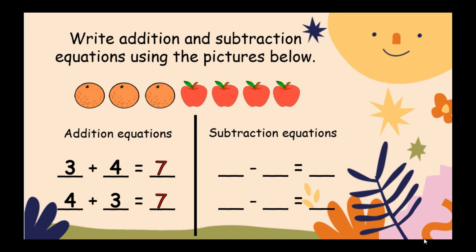Next, how about subtraction equations? How many fruits are there in all? There are seven fruits in all. How many apples? There are four apples. So seven take away four equals three. Next, seven. Then let's take away three. And how many apples are there?